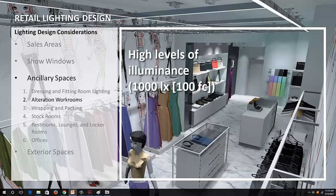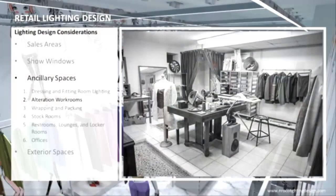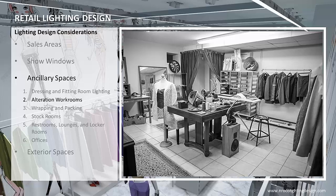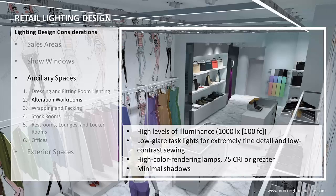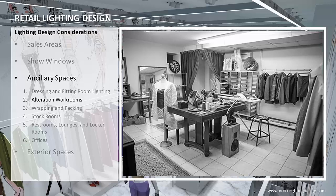Alteration workrooms require high levels of illuminance — 1000 lux or 100 foot-candles — to perform detailed sewing tasks. Color appearance and glare control are especially important. Other important criteria are: low glare task lights for extremely fine detail and low contrast sewing, high color rendering lamps of 75 CRI or greater, and minimal shadows. General lighting should provide the base lighting for the general sewing operation, while supplementary or localized lighting provides the required illuminance for specific tasks including hand and machine sewing, often with dark thread or dark material.